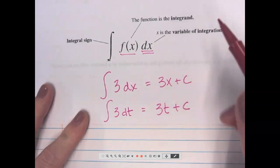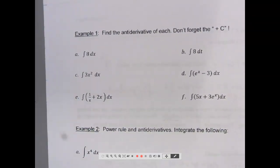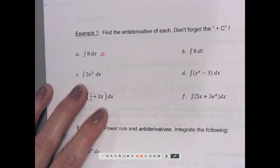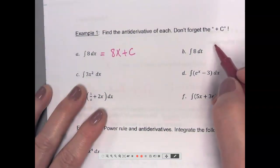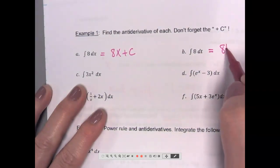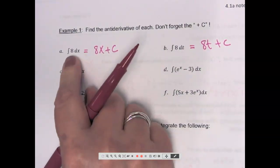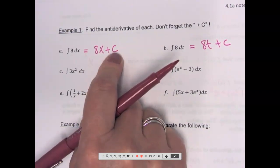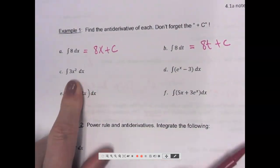When you see this integrand, think of it as giving you instructions: find the antiderivative — just like when you see f prime of x, it's giving you directions to find the derivative. So let's find the antiderivatives of these six examples. The antiderivative of 8 dx would be 8x plus a constant. The antiderivative of 8 dt would be 8t plus a constant, because the derivative of any constant is zero, so it won't show up in the derivative.